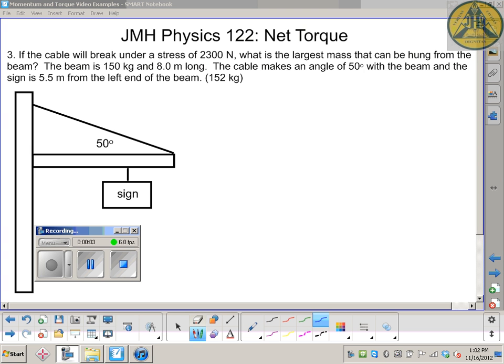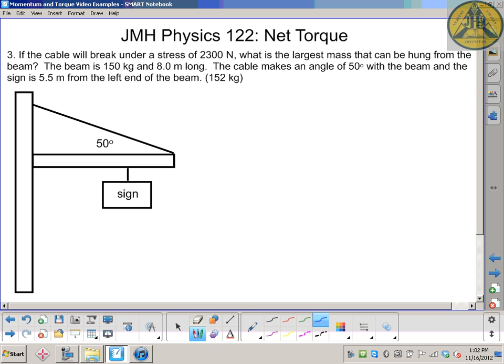This is another net torque application problem where we're solving for the maximum mass that can be held up given a diagram of a beam supported with a cable with tension on it and a sign hanging from the right side of the beam. The cable will break if the tension reaches 2300 newtons.